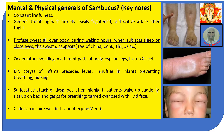Mental and physical generals of Sambucus — Keynotes. Constant fretfulness. General trembling with anxiety, easily frightened, suffocative attack after fright. Profuse sweat all over the body during waking hours. This is the reverse of China, Conium, Thuja, and Cactus.